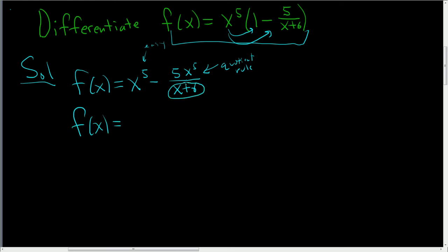So the LCD here is x plus 6, so let's write this as x to the fifth over x plus 6 times x plus 6 minus 5x to the fifth over x plus 6.